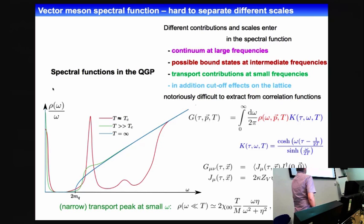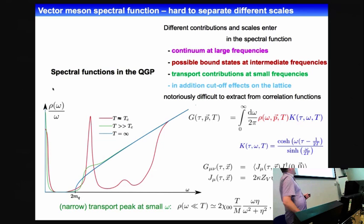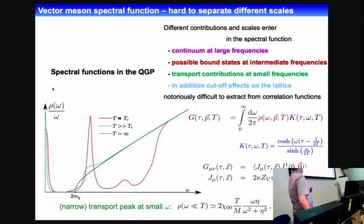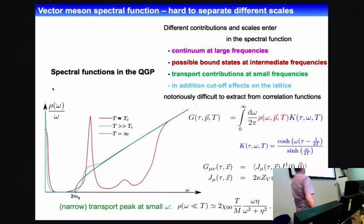It's really notoriously difficult to extract from the correlation functions measured on the lattice this spectral function. We still have large systematic uncertainties, but what we use is an ansatz or different ansatze for the spectral function and then fit the correlation function calculated on the lattice. An additional problem is that there are also cutoff effects in play, and we want to get rid of all these cutoff effects by performing the continuum extrapolation of the correlation function.